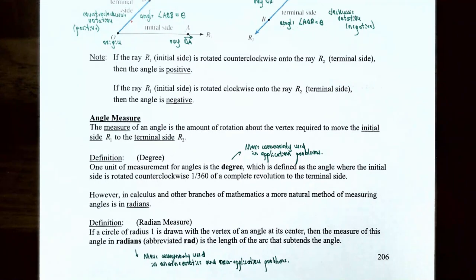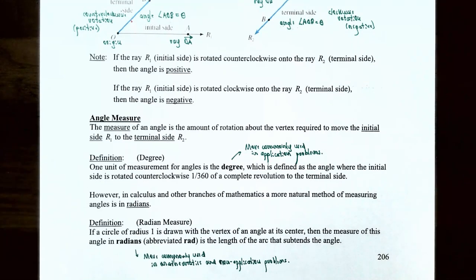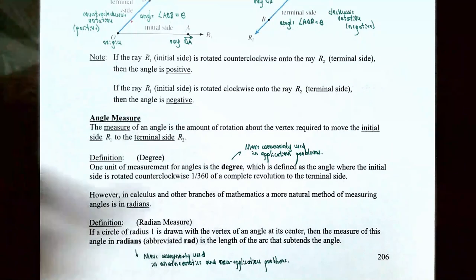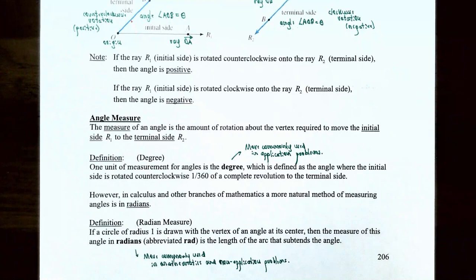The measure of an angle is the amount of rotation about the vertex required to move the initial side R sub 1 to the terminal side R sub 2. One unit of measurement for angles is the degree, which is more commonly used with application problems in trigonometry, defined as the angle where the initial side is rotated counterclockwise 1/360 of a complete revolution to the terminal side.